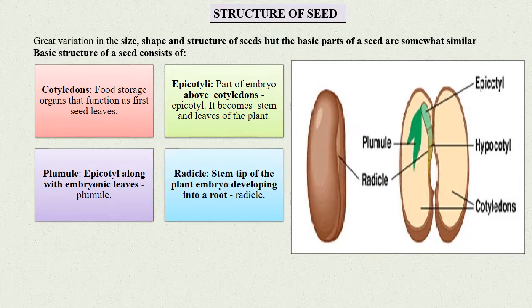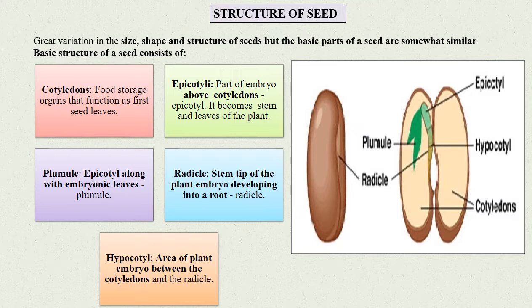Radicle: The stem tip of the plant embryo developing into a root is called the radicle. Hypocotyl: The area of plant embryo between the cotyledons and the radicle.